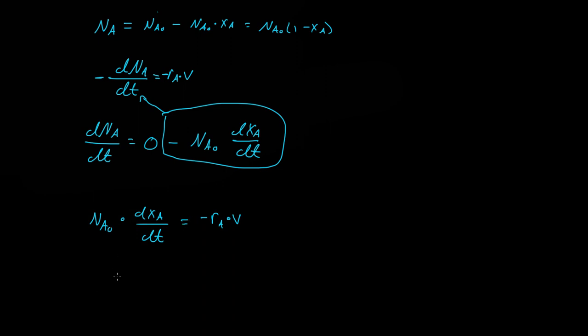we'll just multiply both sides by dt, so we get dt is equal to NA naught times dXA over a negative RA V. So all I did was divide this by RA V, this by RA V, a negative RA V, and multiply it by dt, and then flip the equation.